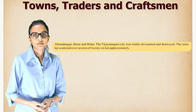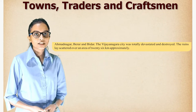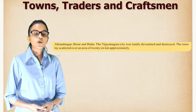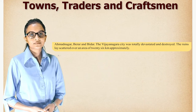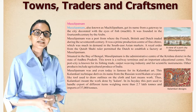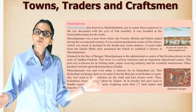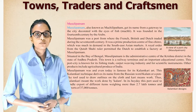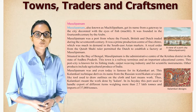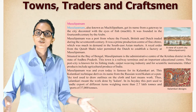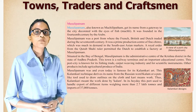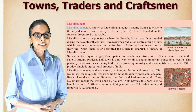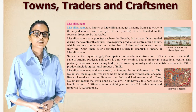The Vijayanagara rulers also ruled over Goa for about 100 years and built many ports along the west coast. In 1469, the Vijayanagara city was totally devastated and destroyed; the ruins lay scattered over an area of approximately 26 kilometers. Masulipatnam, also known as Machilipatnam, gets its name from a gateway to the city decorated with the eyes of fish (machili). It was founded in the 14th century by the Arabs.